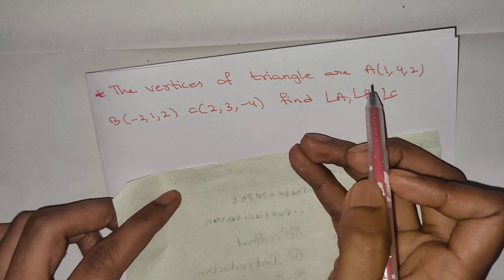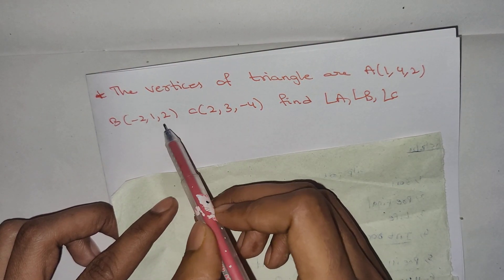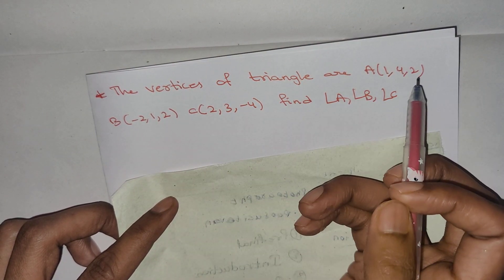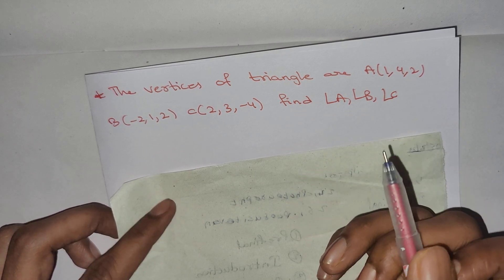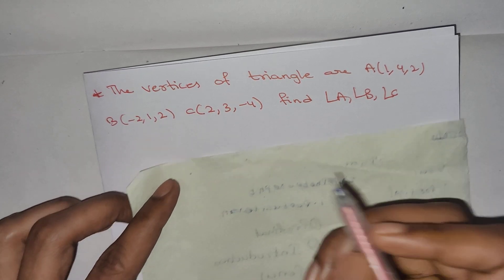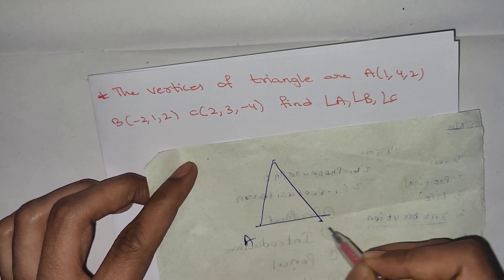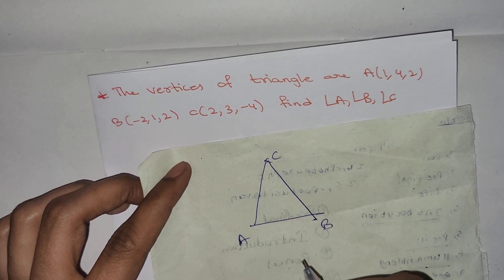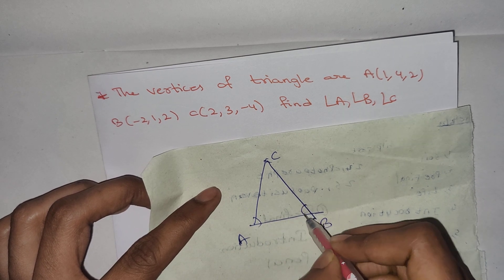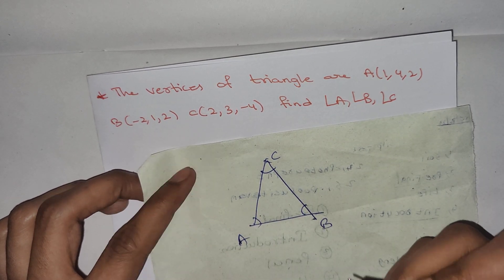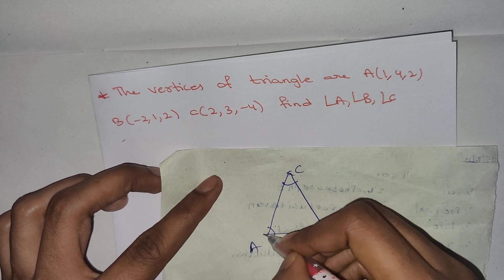The vertices of the triangle are A, B, C. Let's solve this triangle. My name — the vertices are A, B, C.